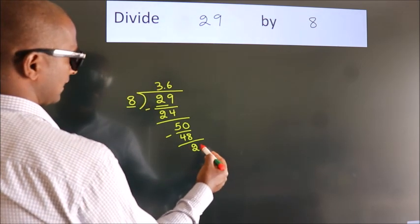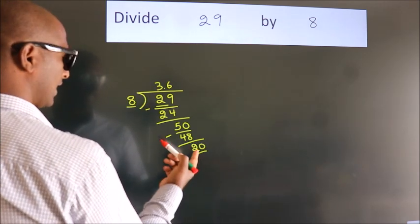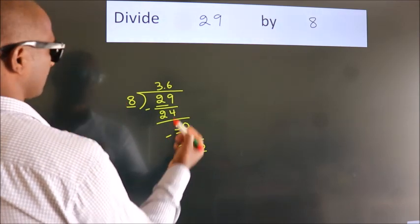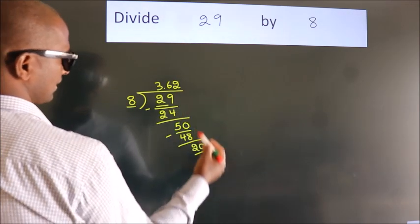so directly take 0. So 20. A number close to 20 in the 8 table is 8 times 2, which is 16.